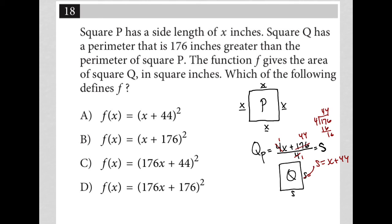So that is my side length. So then if I'm looking for the area, then again, I'm just multiplying S times S or S squared. S squared is the same as X plus 44 squared. And therefore, the correct answer here is choice A, X plus 44 to the second power.